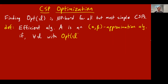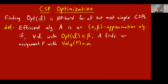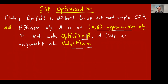Let me make a definition. Let's say an efficient algorithm A for a particular CSP is an alpha-beta approximation algorithm if it has the following property: for all instances where the optimum is at least beta, the algorithm A is guaranteed to find an assignment whose value is at least alpha. I think of beta as standing for 'best' — that's the best assignment, achieves beta — and alpha stands for 'algorithm,' what the algorithm is promised to achieve.